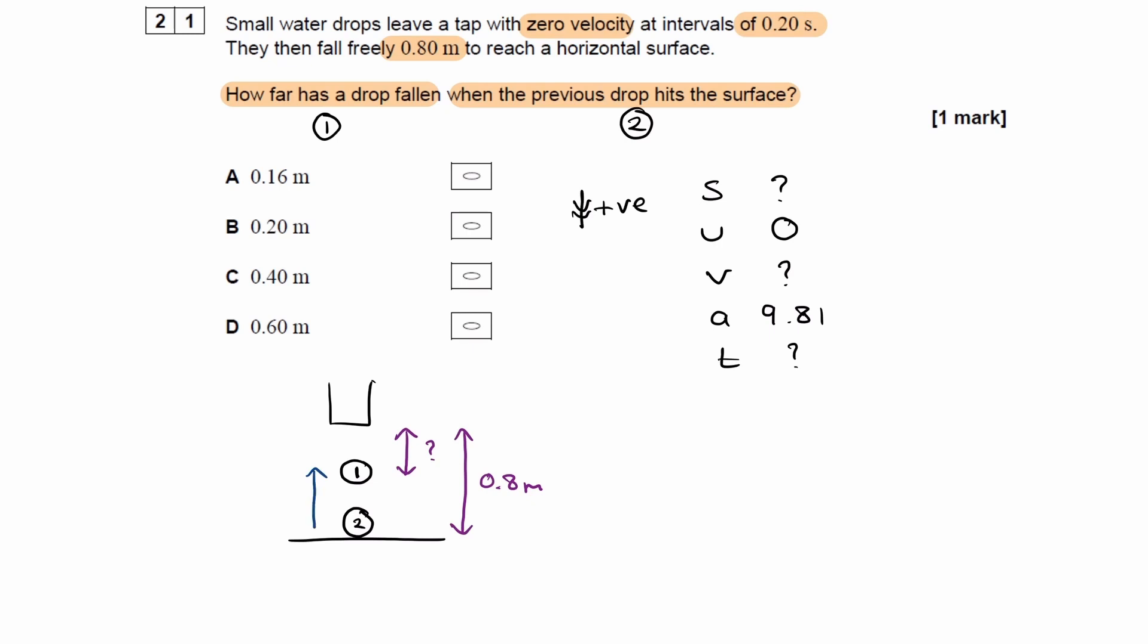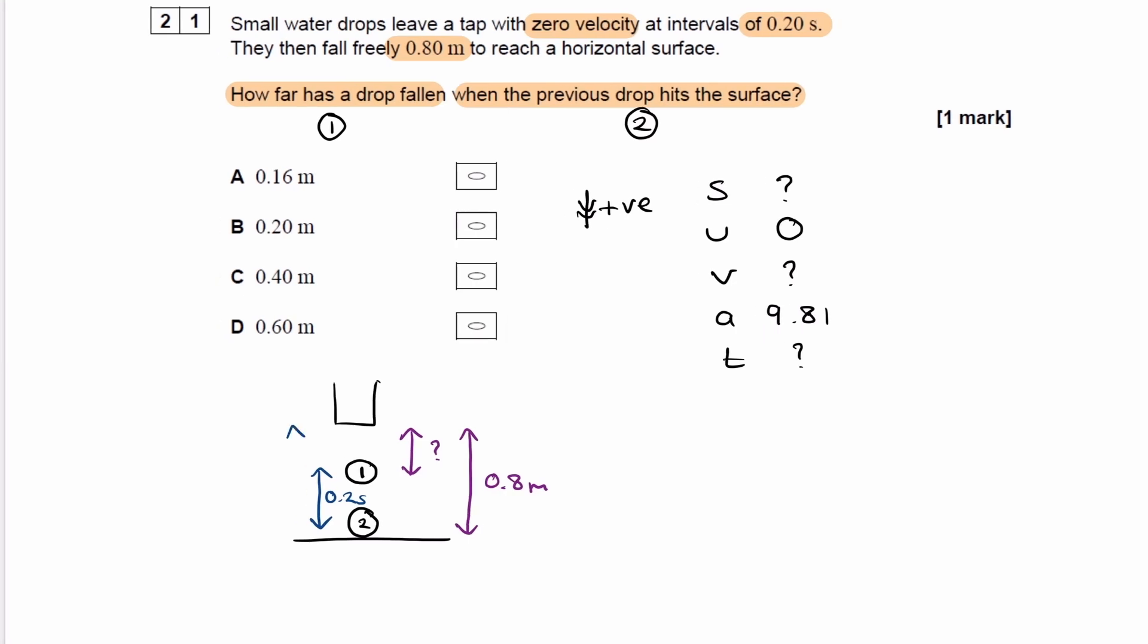So if I put times on the left hand side, this is 0.2 seconds. So if we consider drop two and work out how long it takes for drop two to hit the ground, then we can work out how long drop one has fallen for by taking this time away from this time. And then we will be able to put a time value in here to then work out displacement.